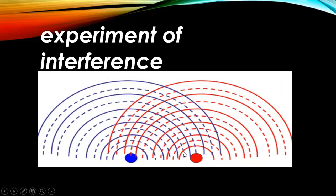If you see another line where the blue dark line is merged with a red dotted line, both are opposite. That means you have destructive interference. The blue represents crest and the red dotted line represents trough. When crest and trough get together, the amplitude is zero.